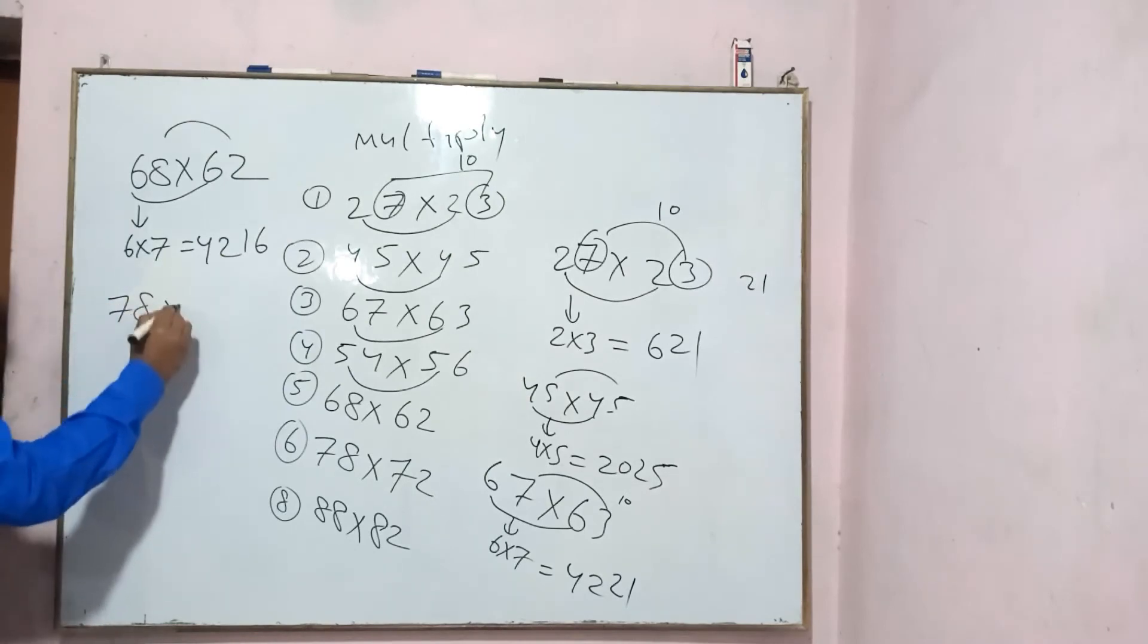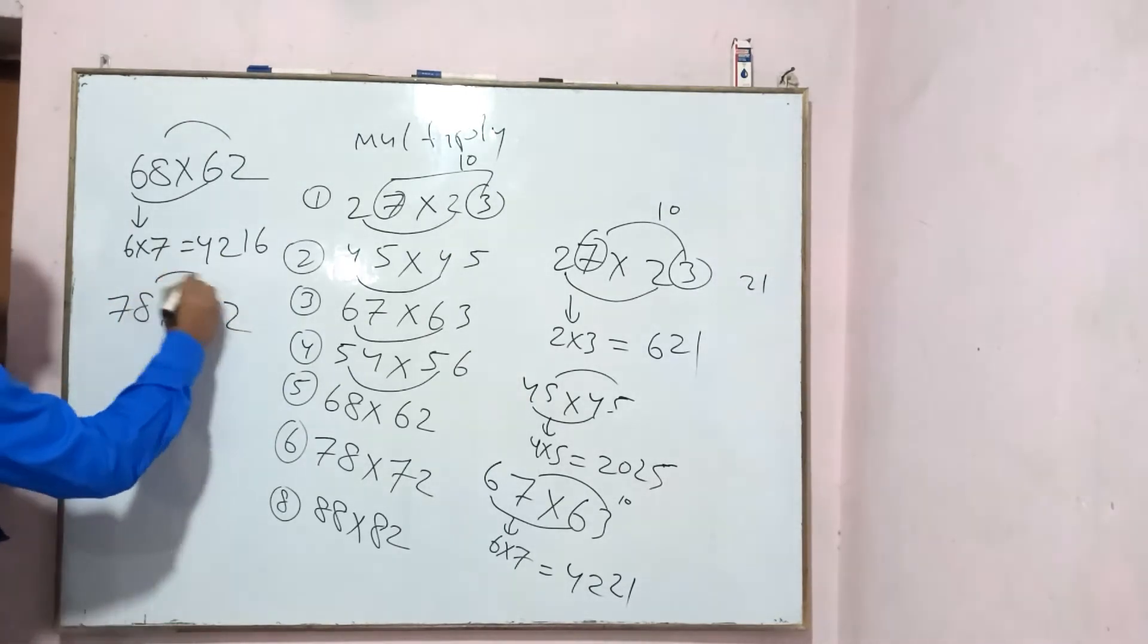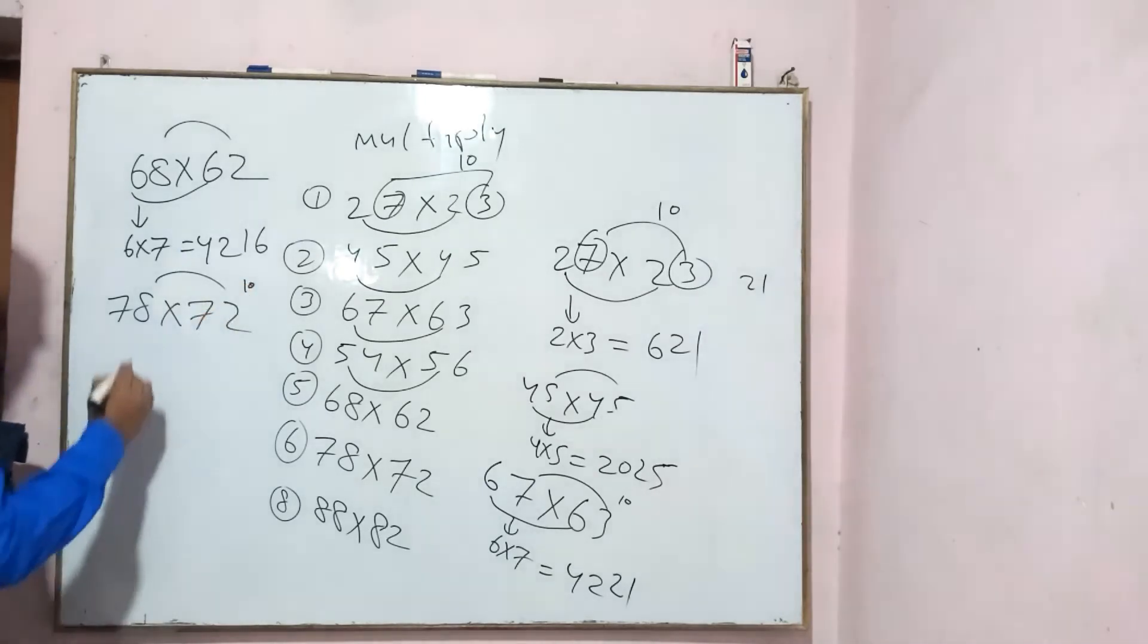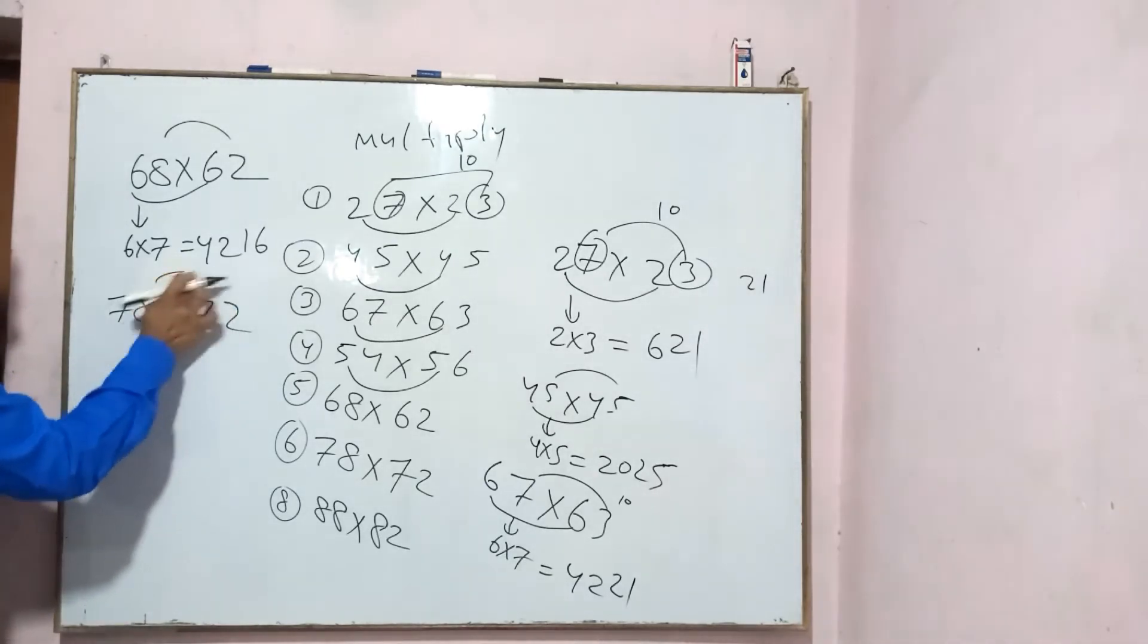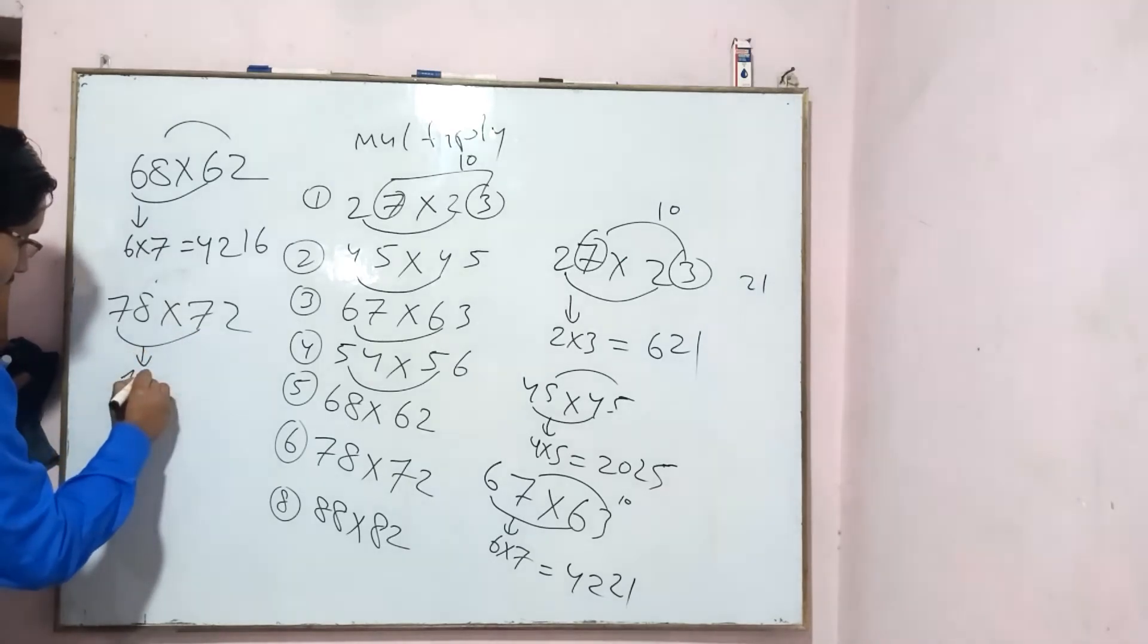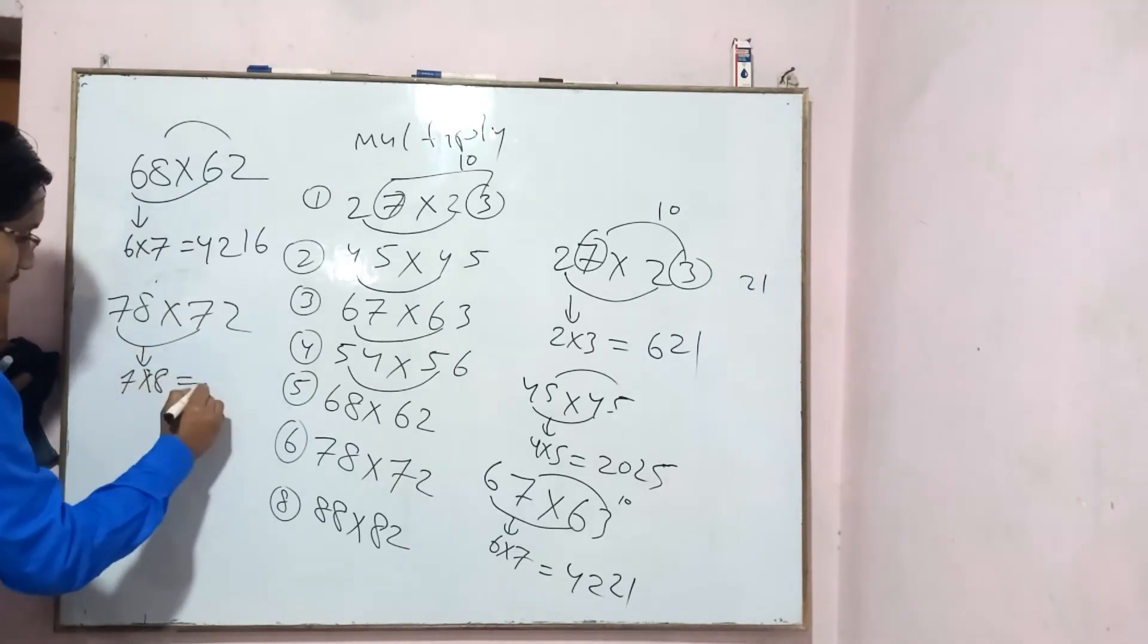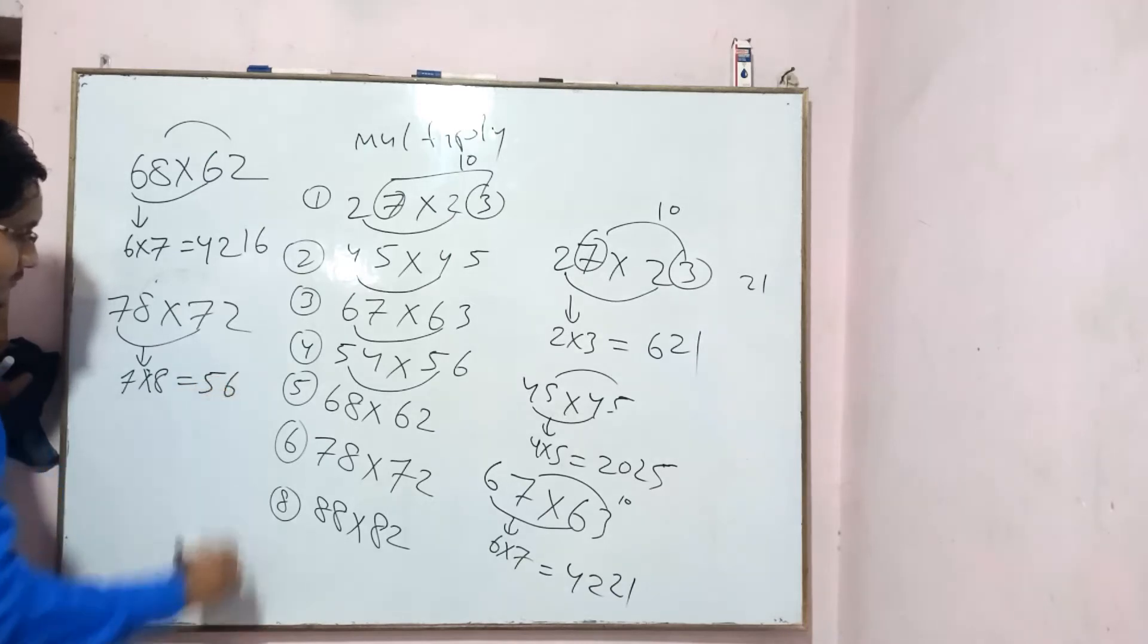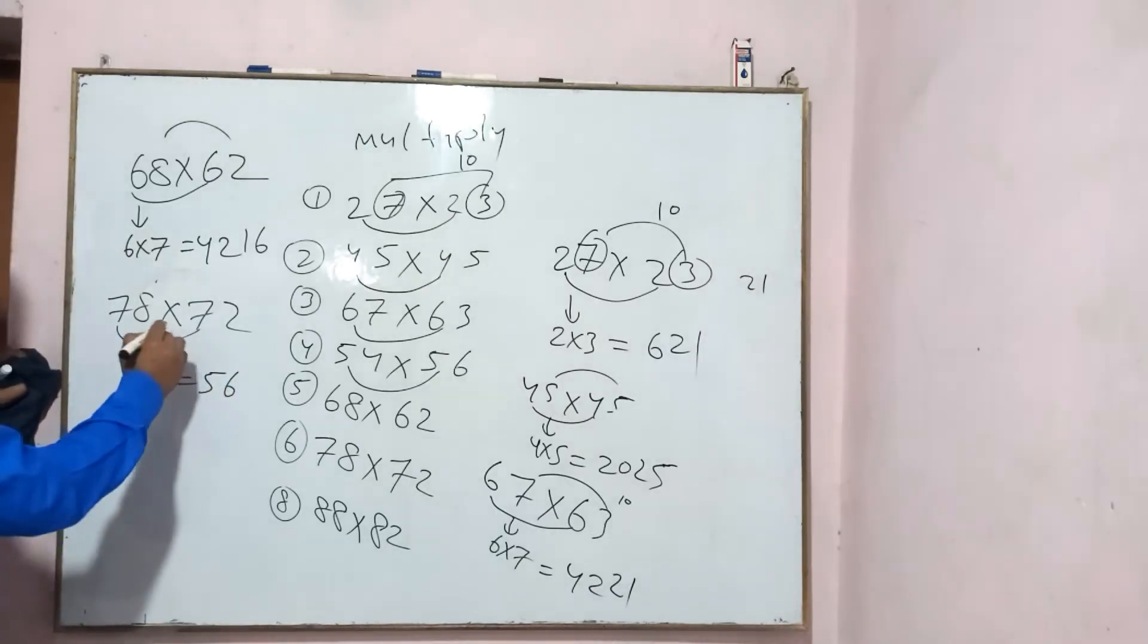78 into 72. So, this is 10. What do you want to do? 7, 7, 7, 8, 56. Now, this is how multiply.